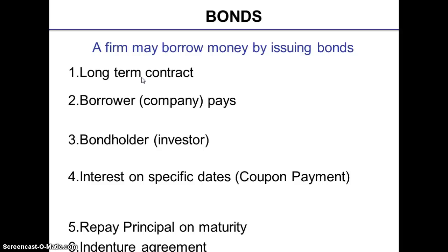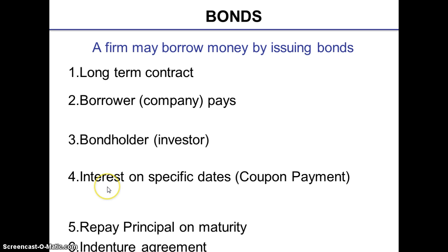For example, on January 1, 2012, Tasty Food Products Company borrowed $50 million by issuing $50 million worth of bonds. Tasty Food Products Company received the $50 million and in exchange promises to make annual interest payments as well as to repay the $50 million on a specified maturity date. The borrower, that is the corporation, pays the principal amount and interest, and the bond holder is also known as the investor. The interest is paid on specific dates, which is also known as coupon payments.